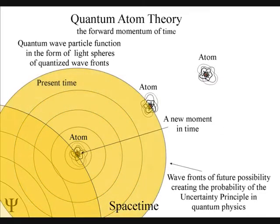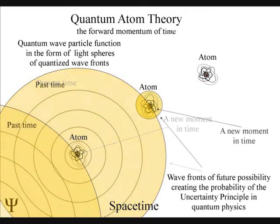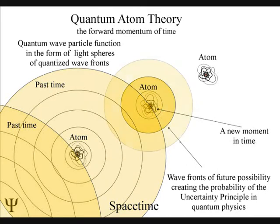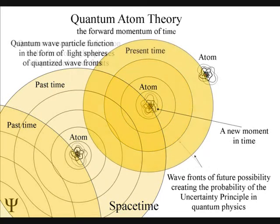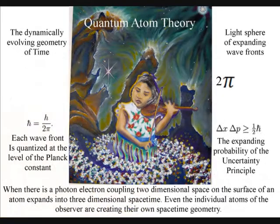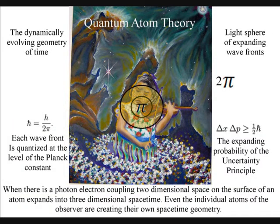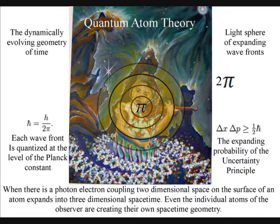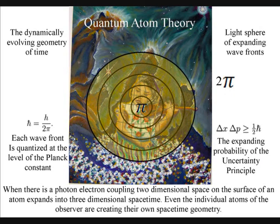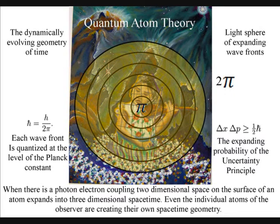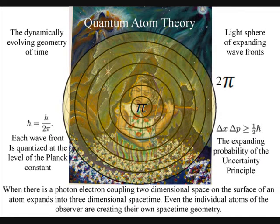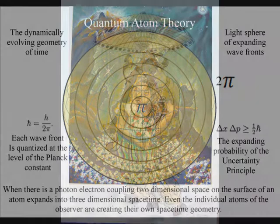This will create a new moment in time that will be part of Einstein's curvature of space-time. There will then be a quantum leap of energy, creating a new wave function of future probability. In this way, two-dimensional space on the surface of an atom expands into three-dimensional space-time, forming its own space-time geometry and symmetry. The geometry of space-time is an innate property of matter, whatever form or shape it takes. Each photon-electron coupling will create its own symmetry around its point in space-time.